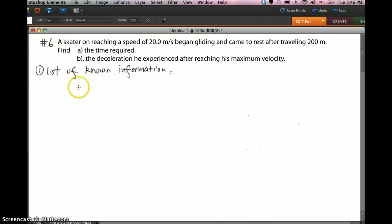Okay, hello everyone. I'm going to explain one of the questions on your homework. That's number 6 on page 66, assigned as homework today. First of all, read this question: A skater on reaching a speed of 20 meters per second began gliding and came to rest after traveling 200 meters.